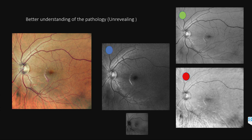Multicolor imaging is sometimes helpful in better understanding of pathology. This patient came with blunt trauma and has a scotoma. At first glance, we make a diagnosis of choroidal rupture, but when you look at the blue, green, and red reflectance, the area of pathology is more markedly seen in the blue reflectance imaging. If it was a pathology of the choroid, it should have been seen in the red reflectance image.